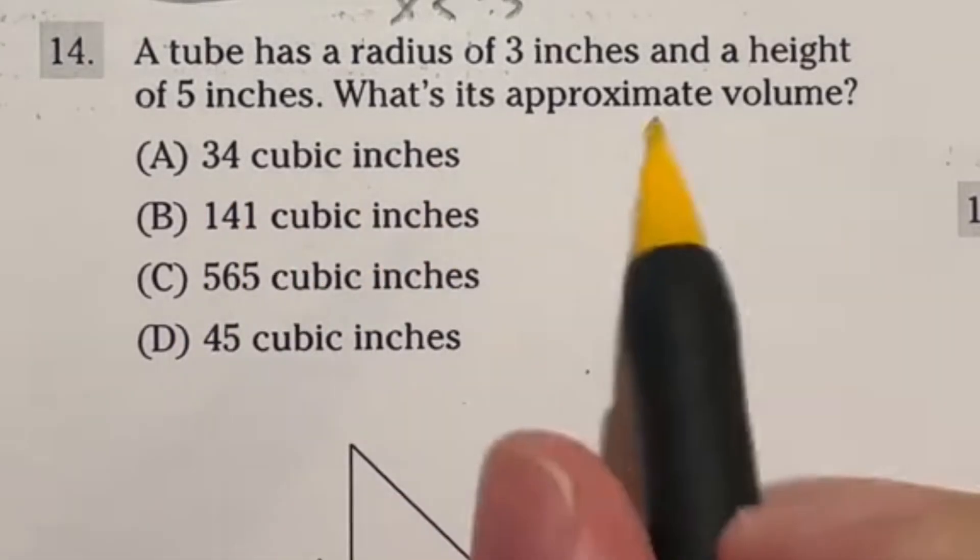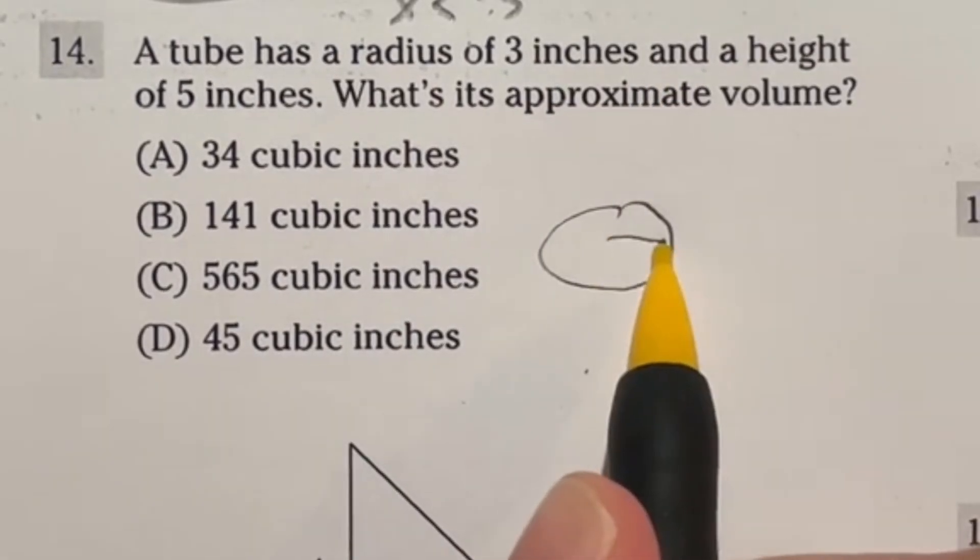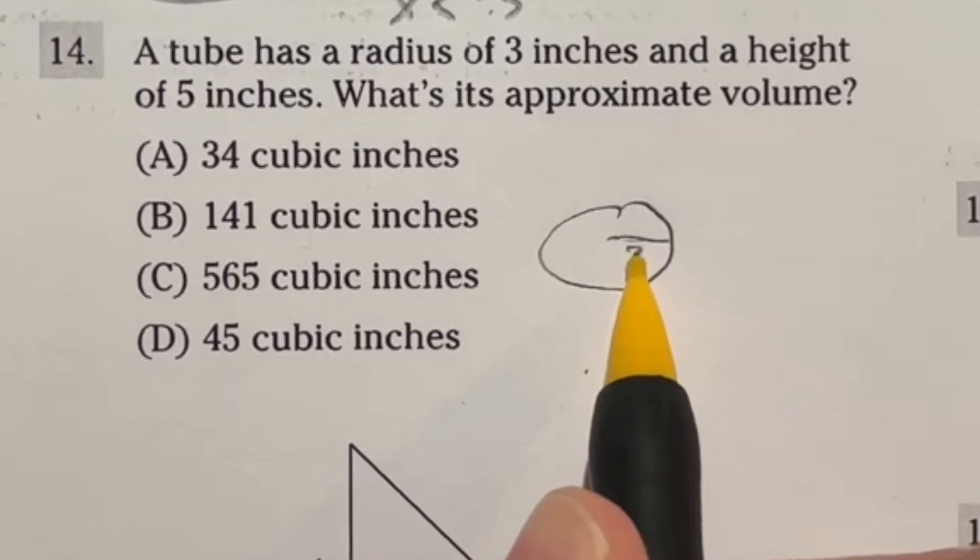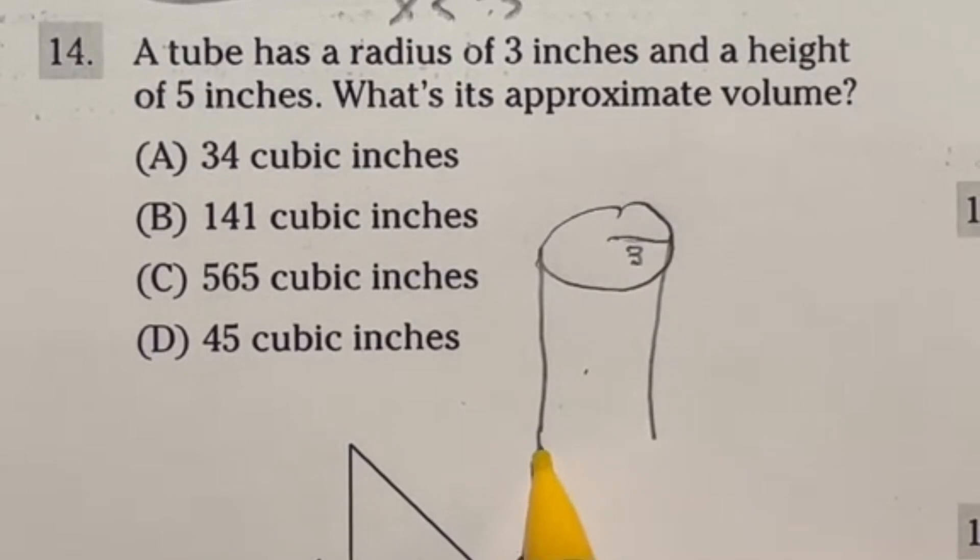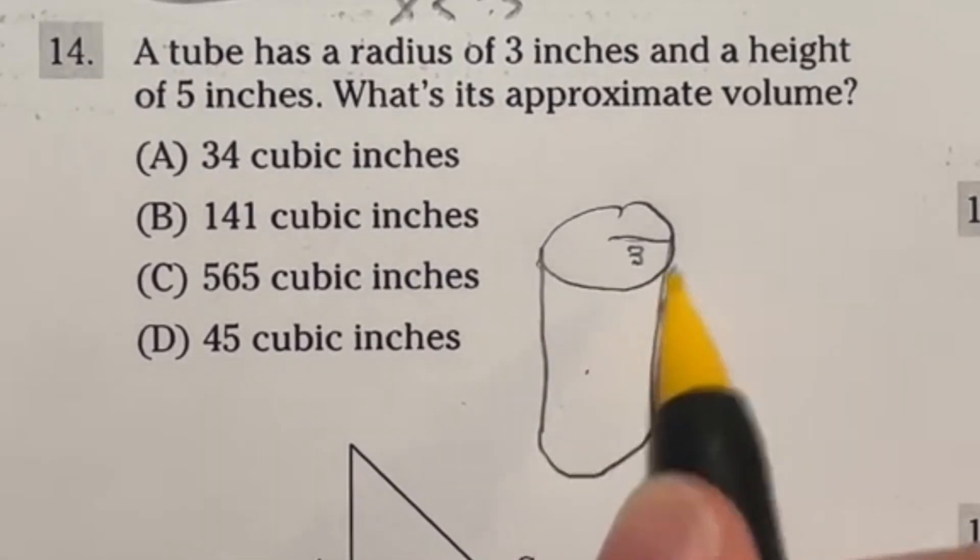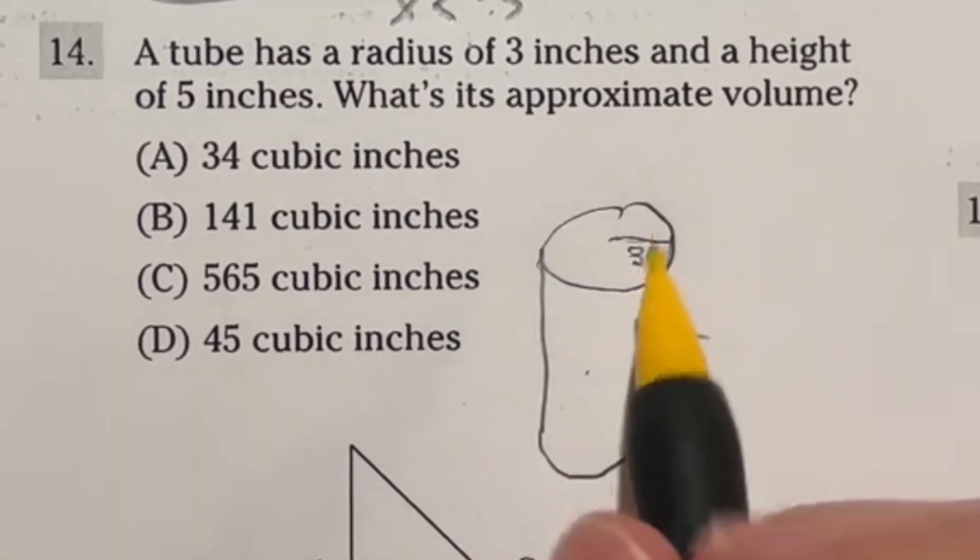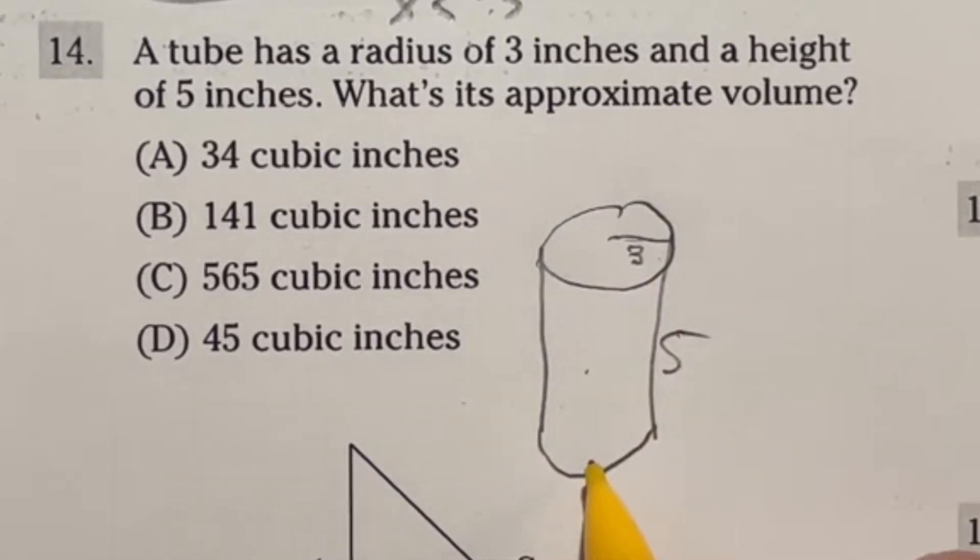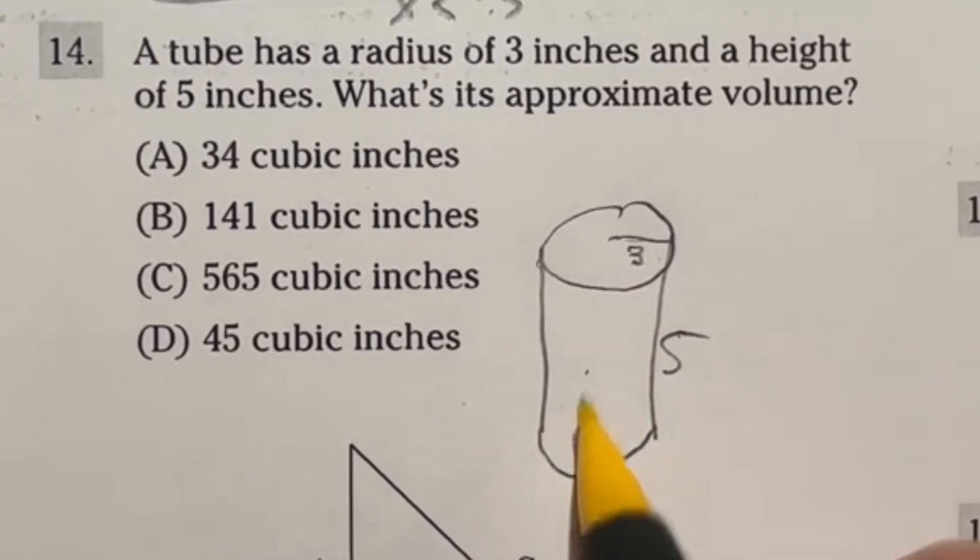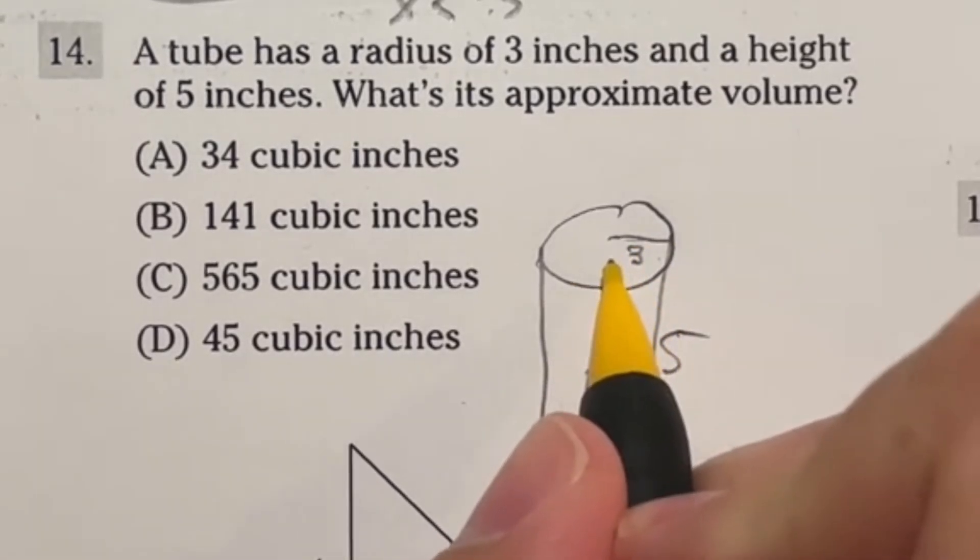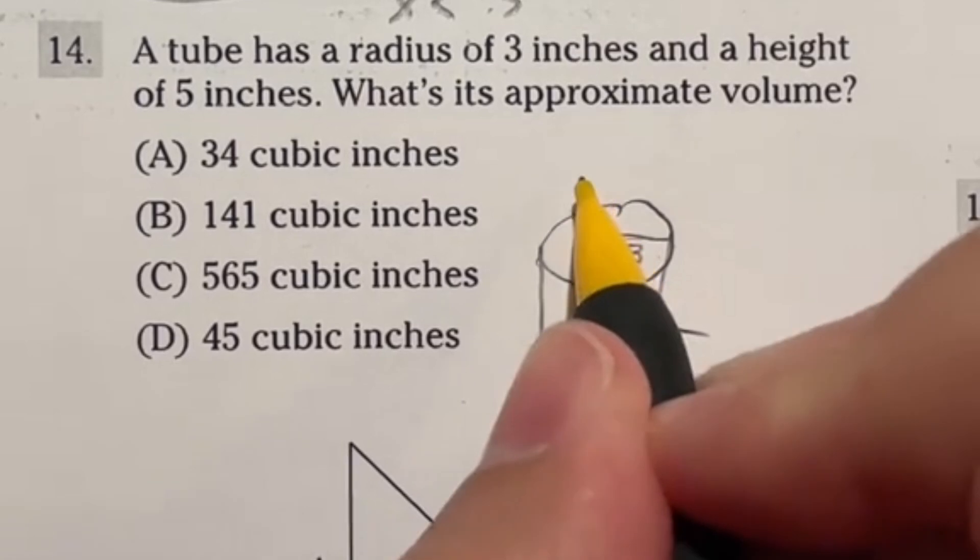So 14 here, it says it has a tube that has a radius of three inches. Now remember, radius is only half of this guy here. So that's going to be a radius of three and a height of five inches. So when you're talking about a tube, we're looking at a cylinder here. And they're saying that the height of this cylinder is five, what's the approximate volume. So how do you find volume of a cylinder? Well, essentially, you're just taking the area of this circle and stacking it on top of each other over and over. So you can find the area of the circle, and then multiply that by whatever the height is.